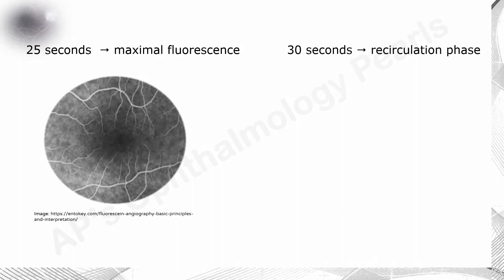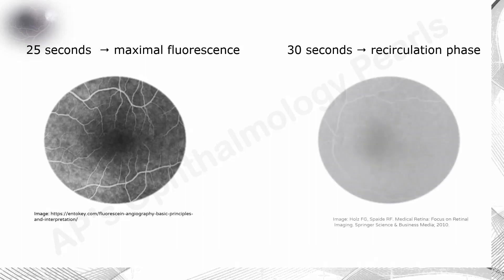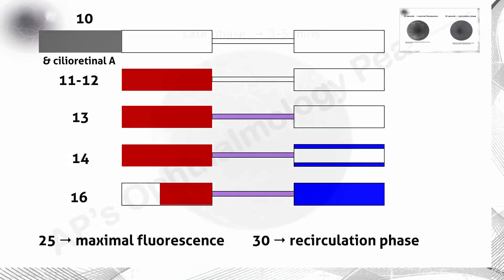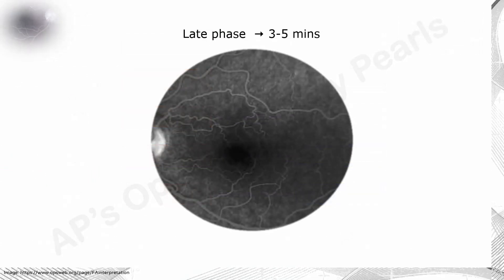Approximately 30 seconds after injection, the first high-concentration flush of fluorescence begins to empty from the choroidal and retinal circulations, and in the recirculation phase, fluorescence at a lower concentration continues to circulate in the fundus. The late phase, typically three to five minutes following injection, demonstrates the gradual elimination of dye from the retinal and choroidal vasculature.